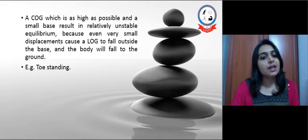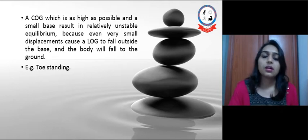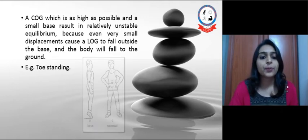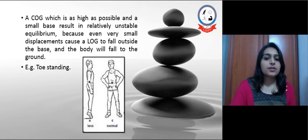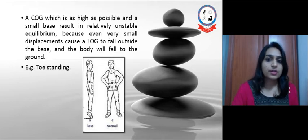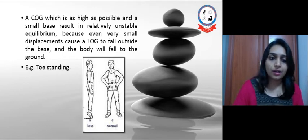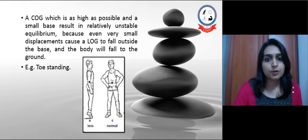If COG is as high as possible and the base is very small, then unstable equilibrium will result. For example, if a person is standing in a toe standing position, then the base of support is less compared to normal stride standing, in which center of gravity is also high and LOG falls within that small base of support. With any kind of small displacement or force, the body falls to the ground due to LOG moving out of the base of support.